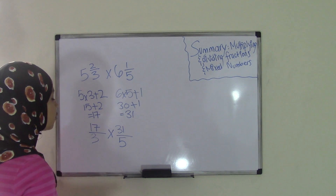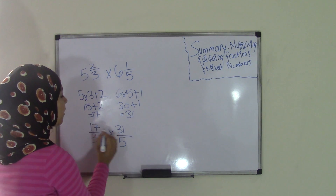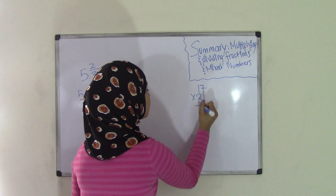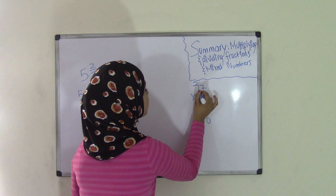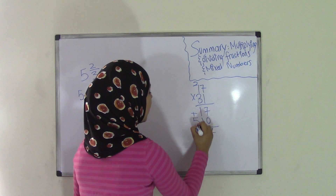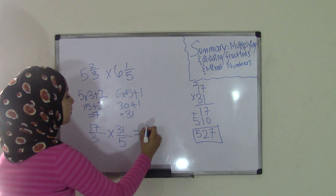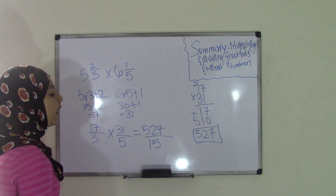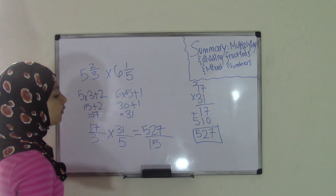So we have 17 times 31. Working through the multiplication: 7 times 1 is 7, 1 times 1 is 1, put a 0, 3 times 7 is 21 carry the 2, 3 times 1 is 3 plus 2 is 5. Adding those: 7 plus 0 is 7, 1 plus 1 is 2, bring down the 5 — giving a product of 527. So 527 becomes your numerator, and your denominator is 3 times 5 which equals 15, giving you 527/15. But this is an improper fraction, so we have to turn it into a mixed number.